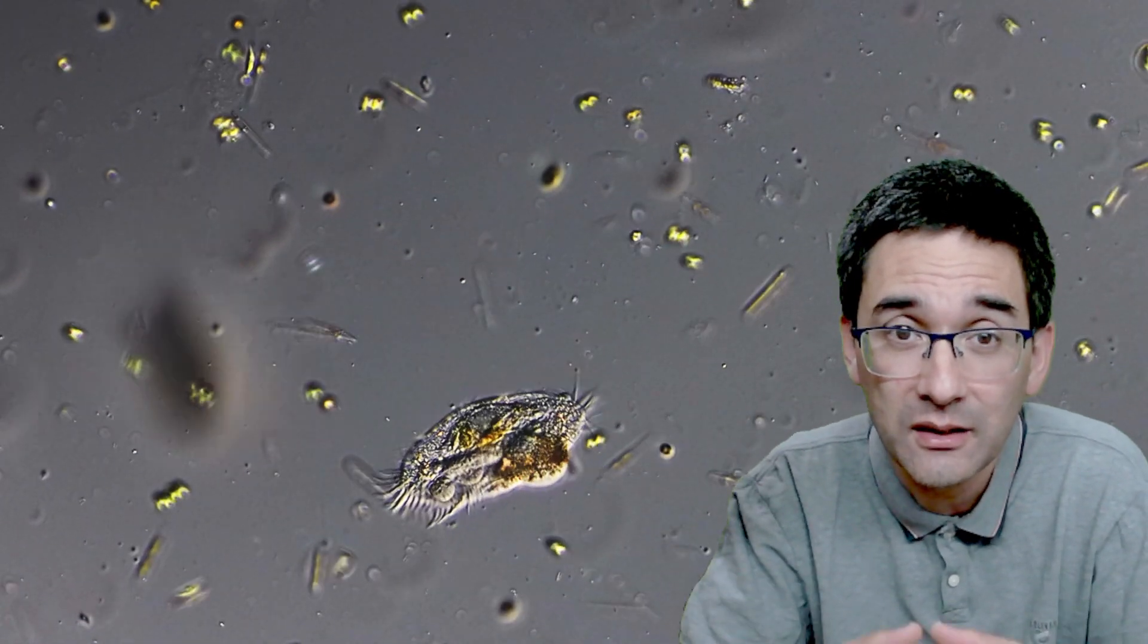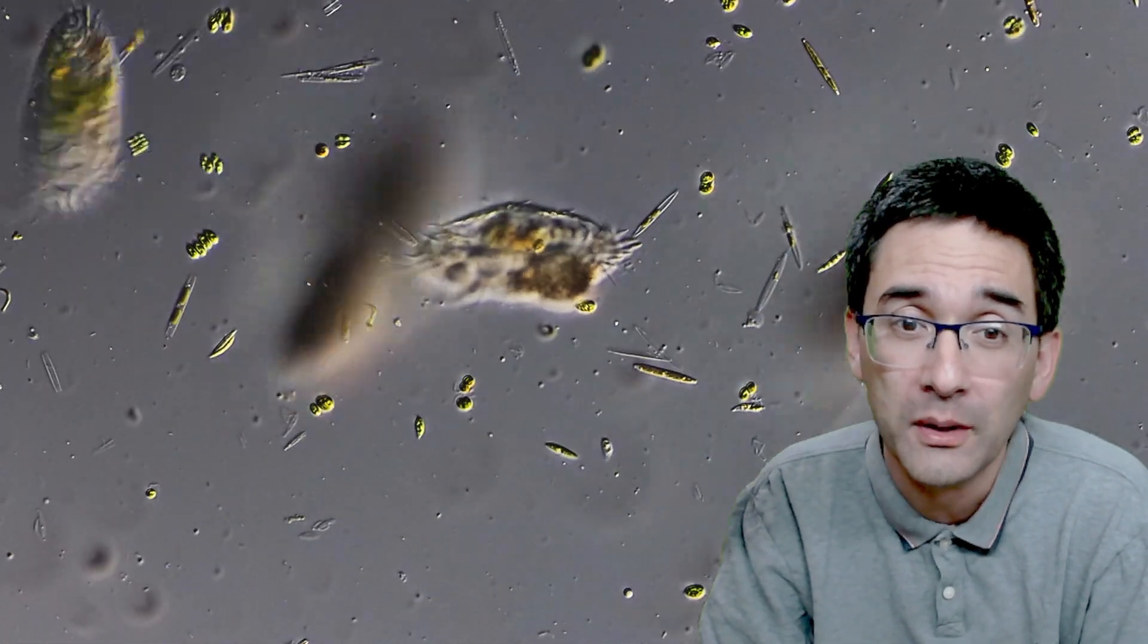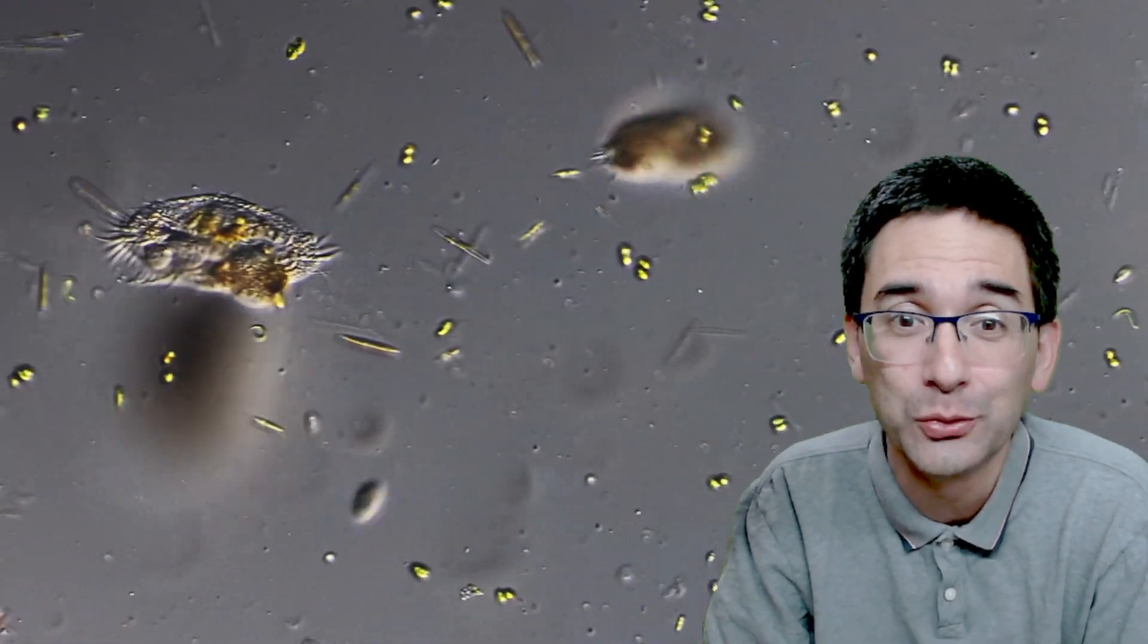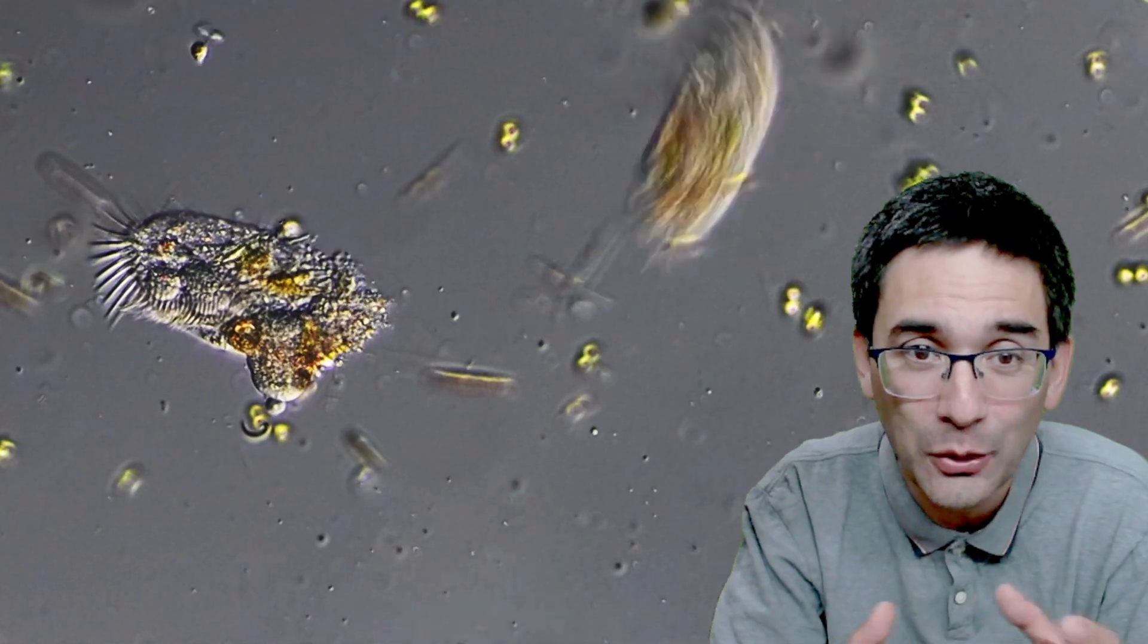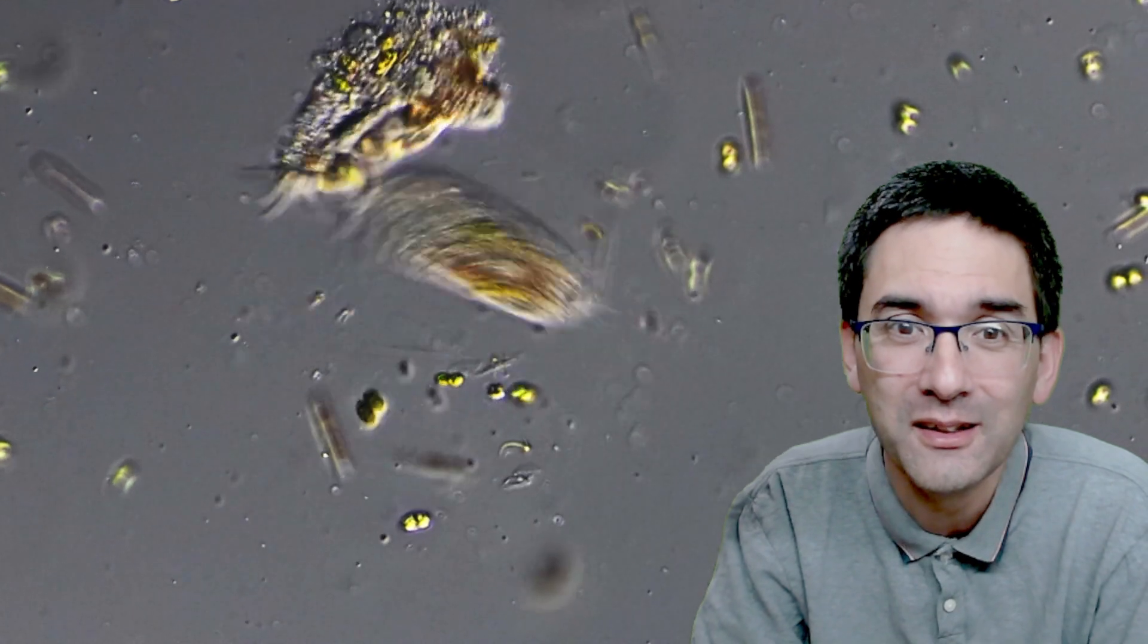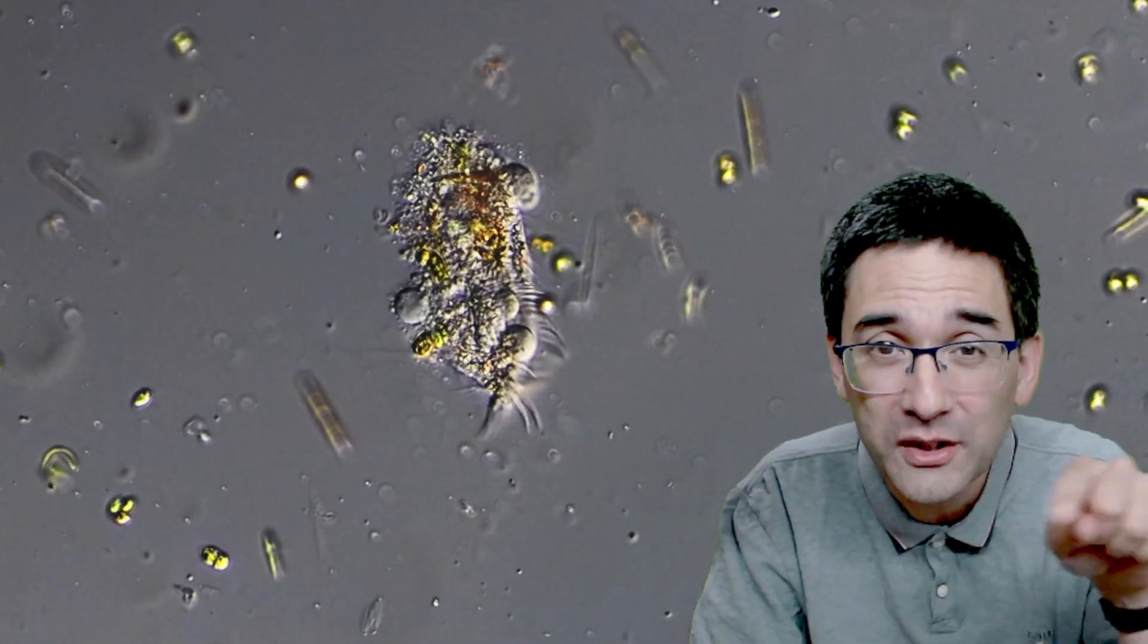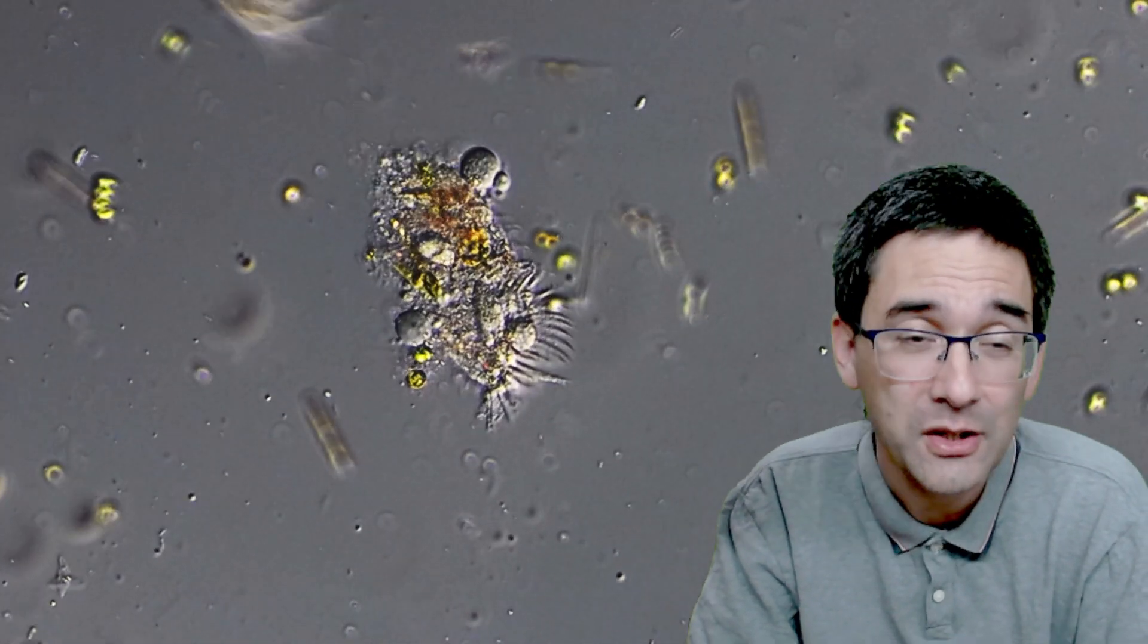This cell here also got a bit too much hydrogen peroxide and starts to break open now, spilling out the cell's contents. But the others are still swimming around. Before they die, they start to go in a circle—they lose control a little bit. You see that the action of the hydrogen peroxide, at least in this case, is not quite as fast as when I'm adding the alcohol-containing disinfectant.